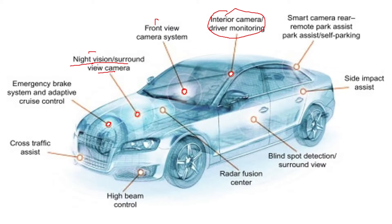You can have an emergency brake system, cross traffic assist, high beam control, a radar fusion center, blind spot detection, side impact assist, and a smart camera for rear parking. This shows just a few of the many electronic controls used in automobiles; there are many more inside as well.